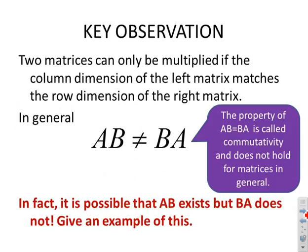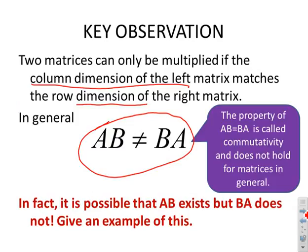A key observation: two matrices can only be multiplied if the column dimension of the left matches the row dimension of the right. From this, it's clear that in general A×B is not equal to B×A. This is obvious from the dimensions alone if either A or B is not square, and also because the implied multiplications are entirely different. If AB = BA, this is called commutativity, and it doesn't hold very often — it's very rare in general. The order of multiplication is critical.